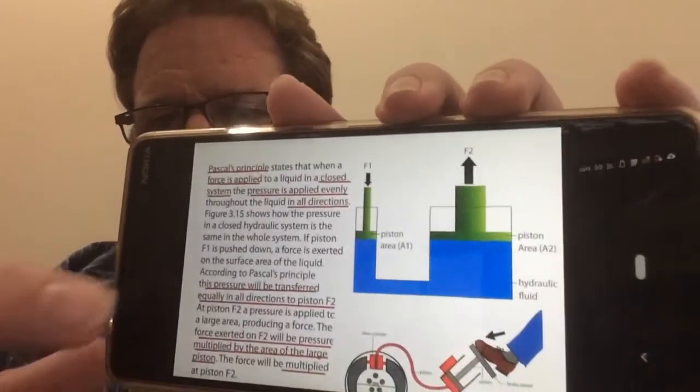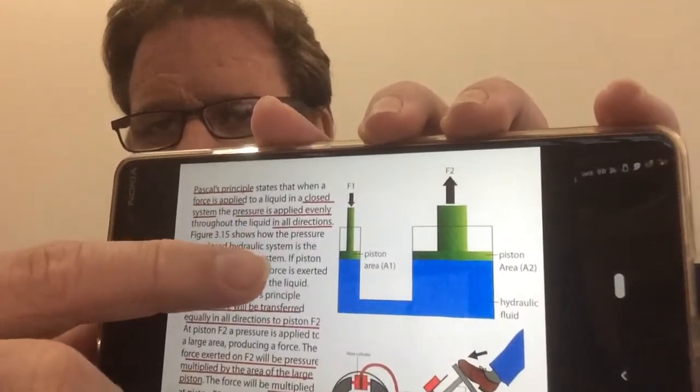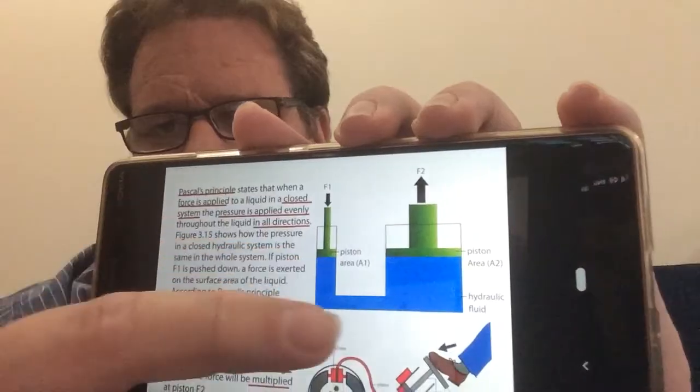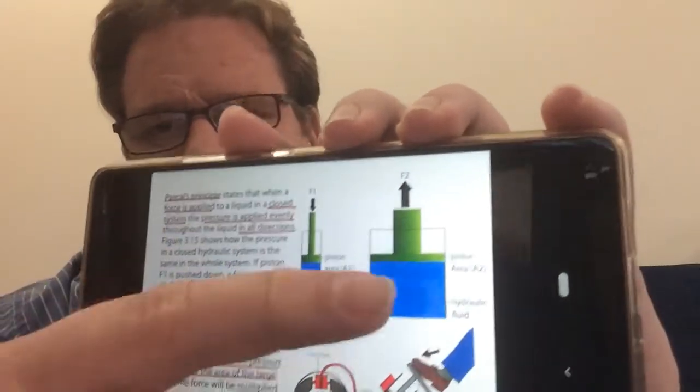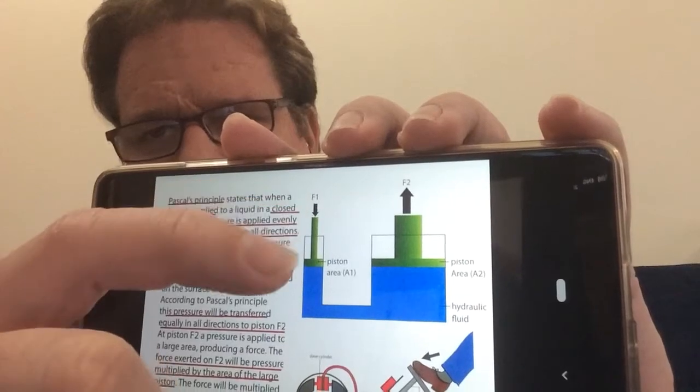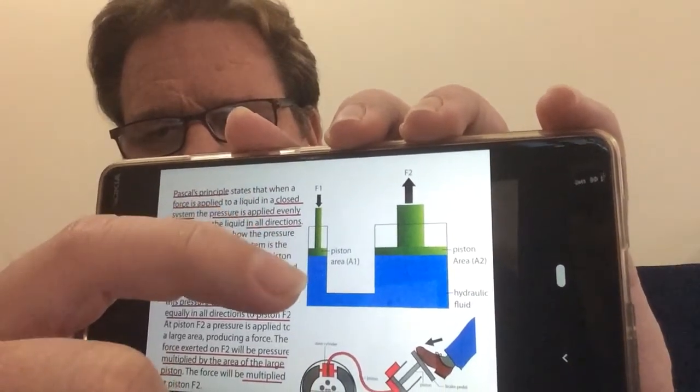Pascal's principle teaches us that the force you apply on any part of a liquid is distributed evenly through the liquid. So the small force that's put on the top over here pushes down onto this liquid and is then distributed evenly to the much larger area here, allowing us to lift something.